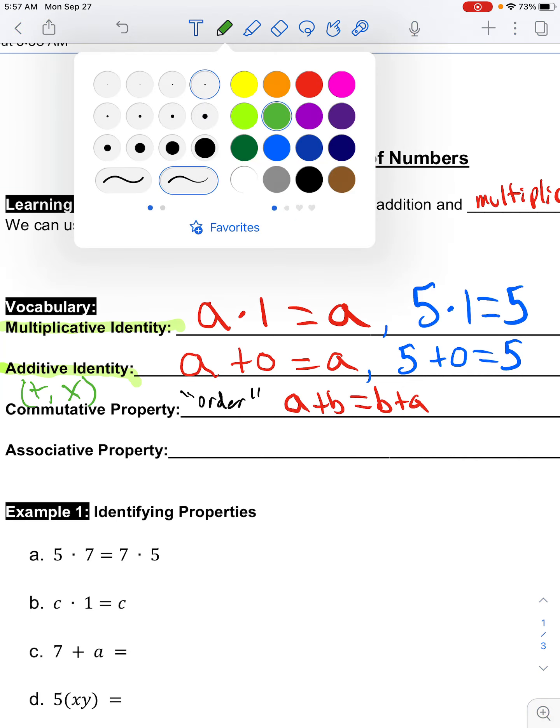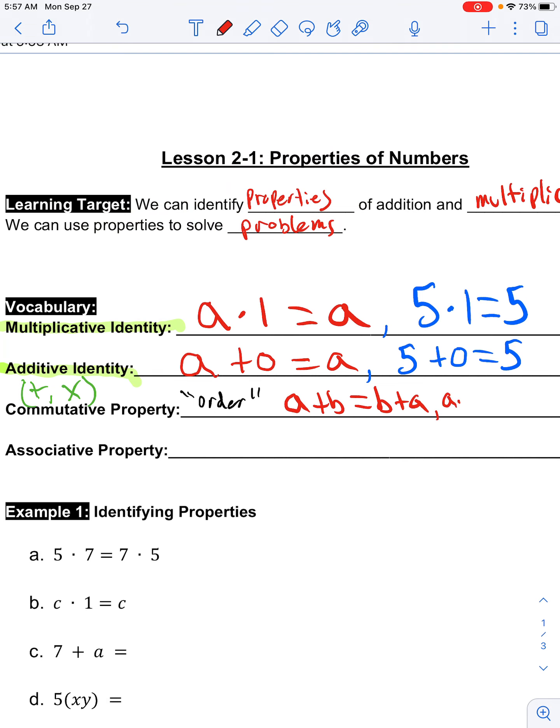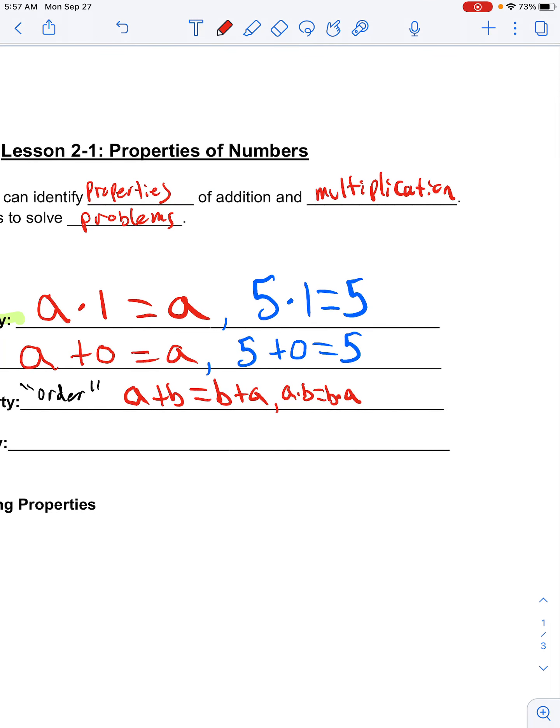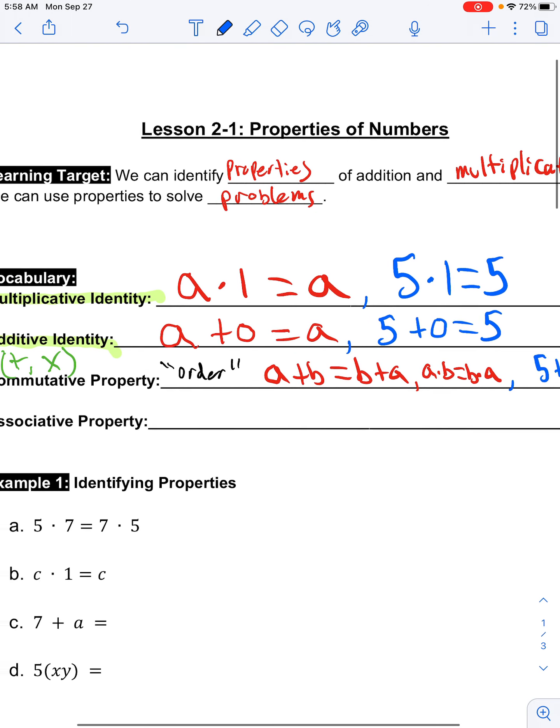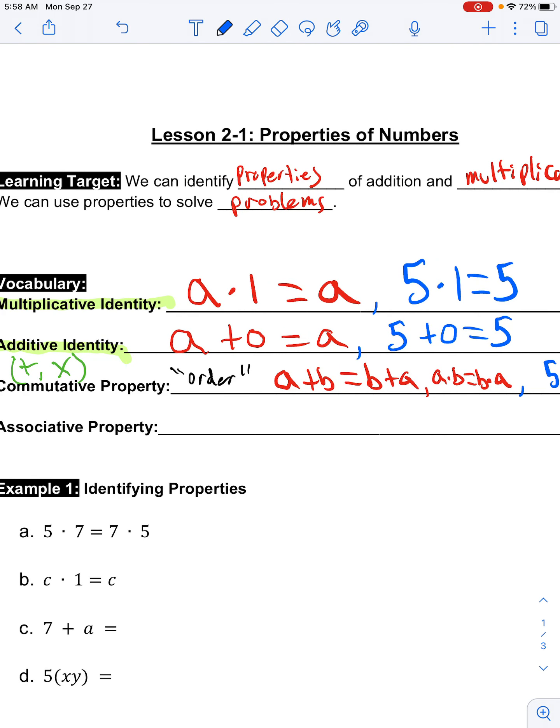We can also say a times b equals b times a. So now we'll do some numerical examples. Let's say five plus two equals two plus five, or five times two equals two times five. Seven equals seven, ten equals ten. So those are two examples using addition and multiplication.